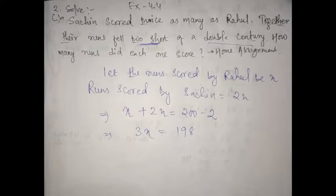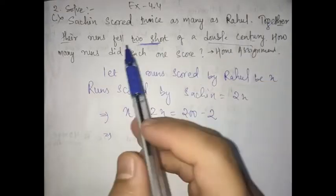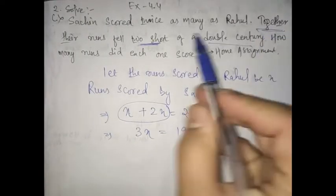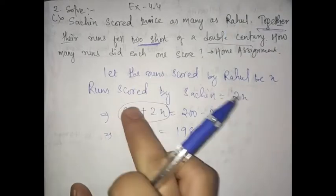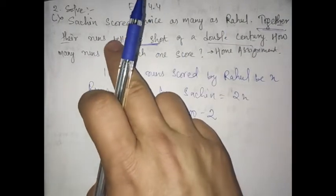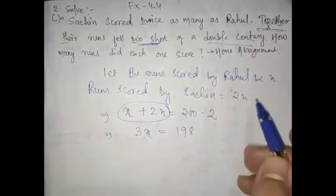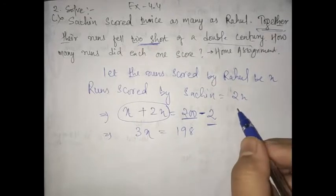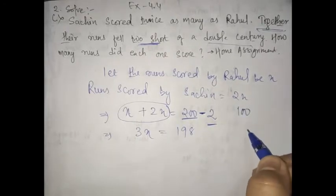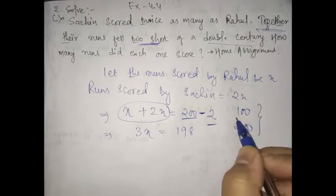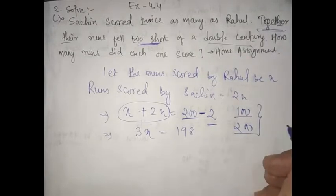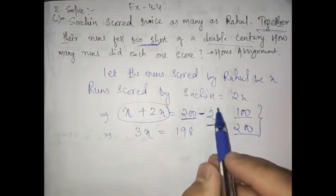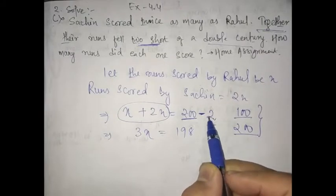We can write X plus 2X equals 3X, and 200 minus 2 is 198. Just read the question properly: together their run is X plus 2X, that is Rahul's run and Sachin's run together. 'Too short by 2' means minus 2. Double century in cricket means 200. So to reach 200 they were short by 2 runs, that is minus 2.